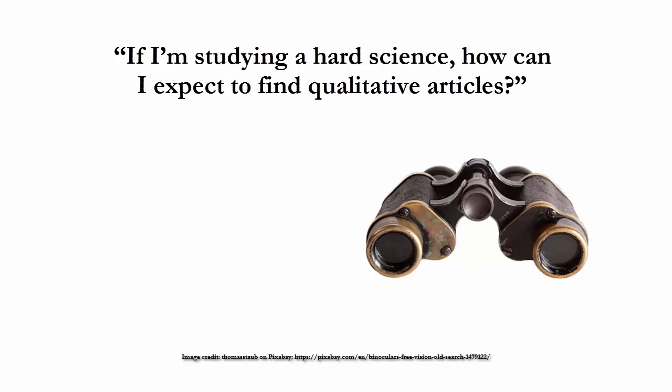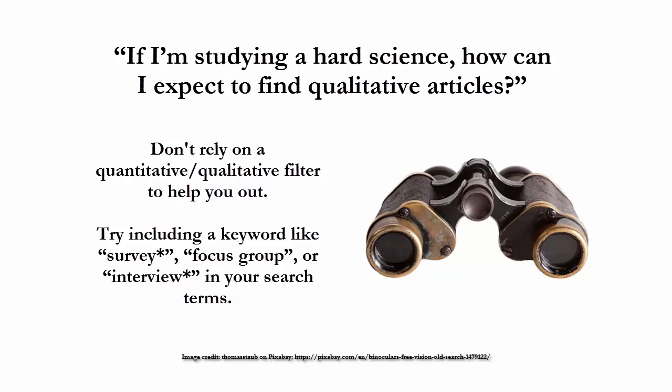Frequently, research students are asked to find a certain number of qualitative and quantitative articles for a class assignment. They usually have no trouble finding the quantitative articles, but the qualitative articles are often elusive. Unfortunately, most databases do not offer a quantitative/qualitative filter to help you find these articles. Instead, try including a keyword like 'survey,' 'focus group,' or 'interview' in your search terms. These methodologies are often more qualitative in nature and may get you the articles you need.